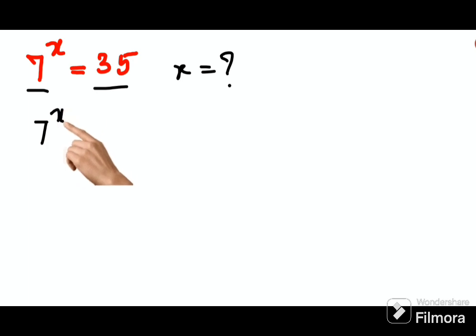First step, 7 raised to x equals, this can be written in the form of 7 into 5. But apart from this we can't do anything, so what we'll do here is...